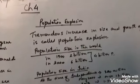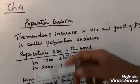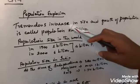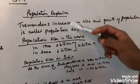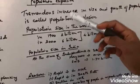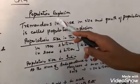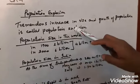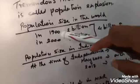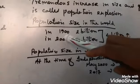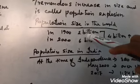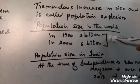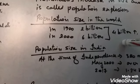Next topic is population explosion. What do you mean by explosion? Explosion means sudden increase. Why the population in India has suddenly increased? Not only in India but in the entire world there is an explosion of population. This is the definition: tremendous increase in the size and growth of population. It is called population explosion. There is data given here about the population size in the world. In 1900, it was only 2 billion, while in 2000 AD, it was 6 billion. There is a sharp rise of 4 billion people in the world.